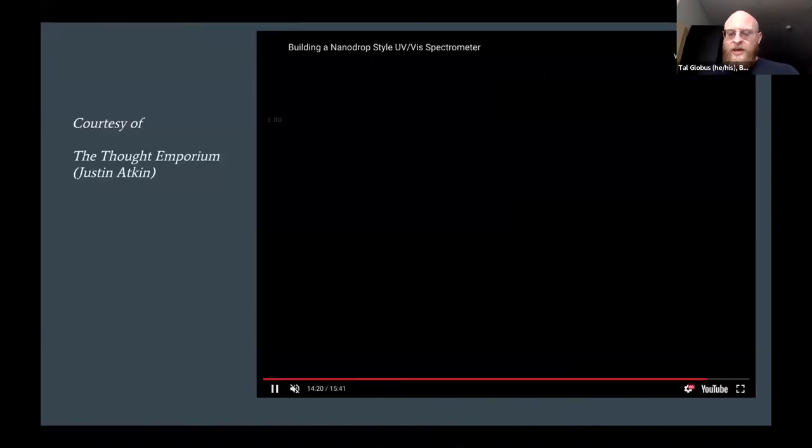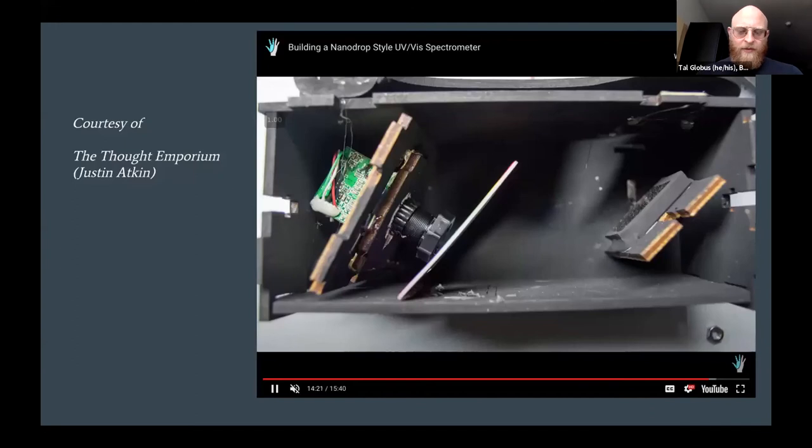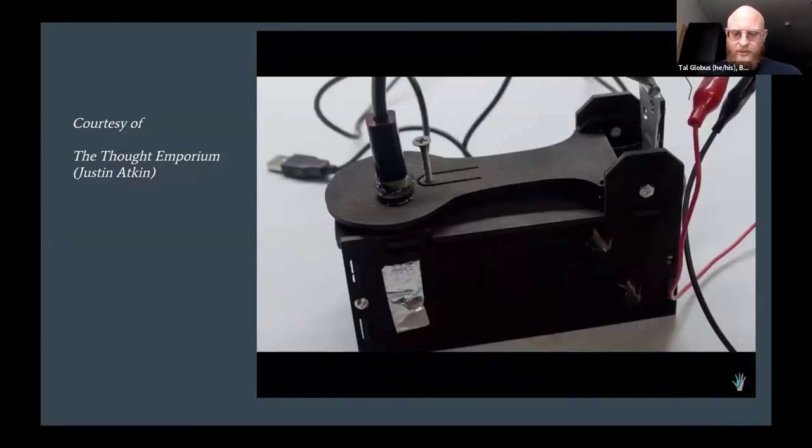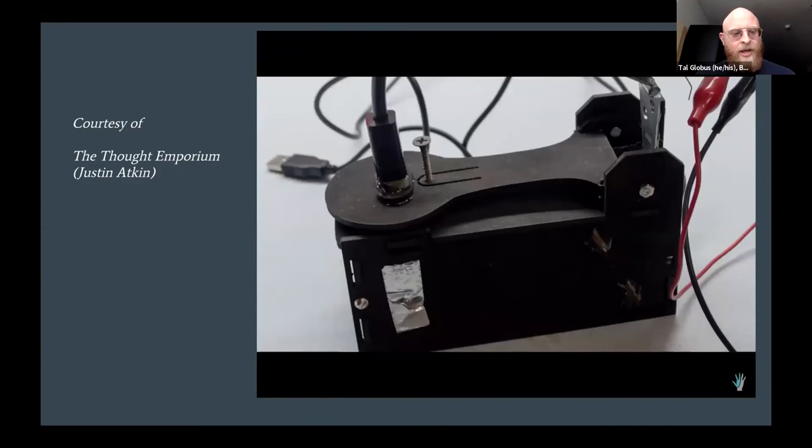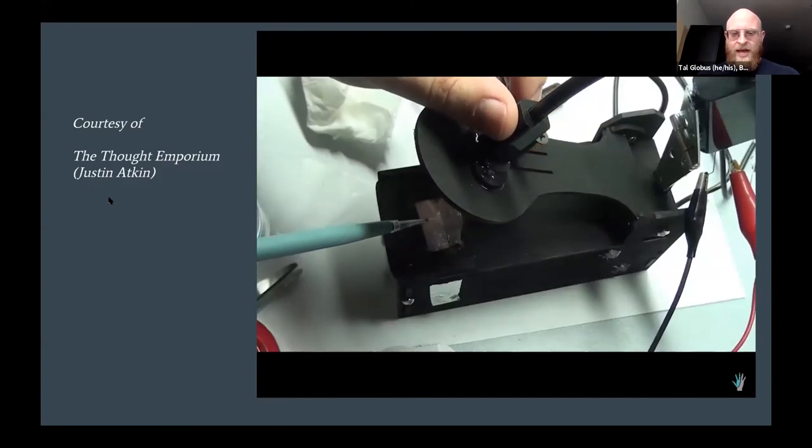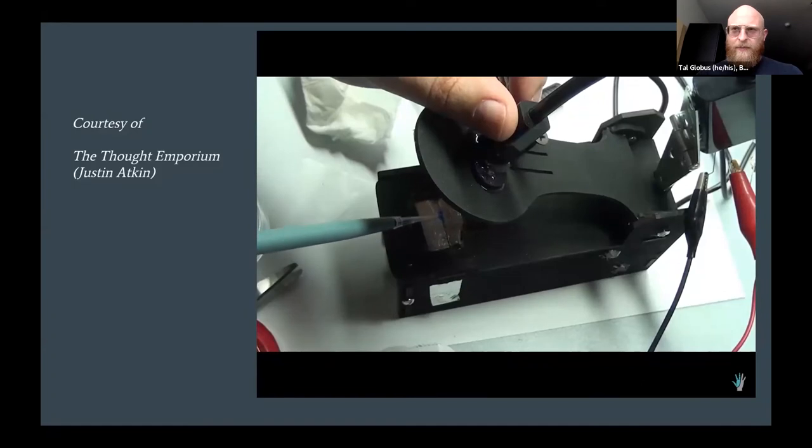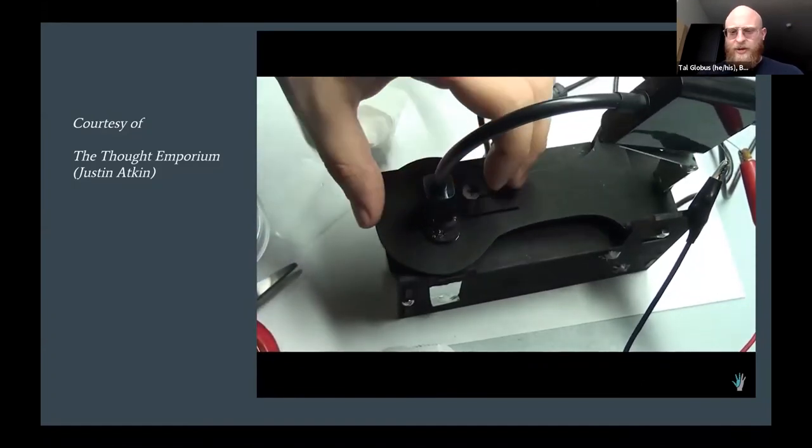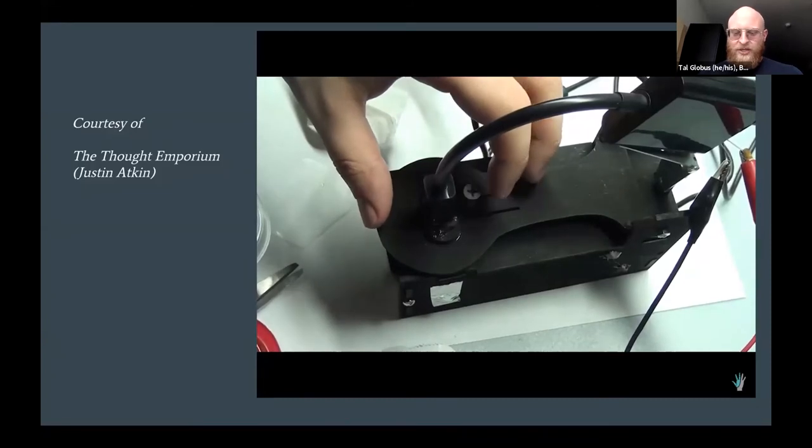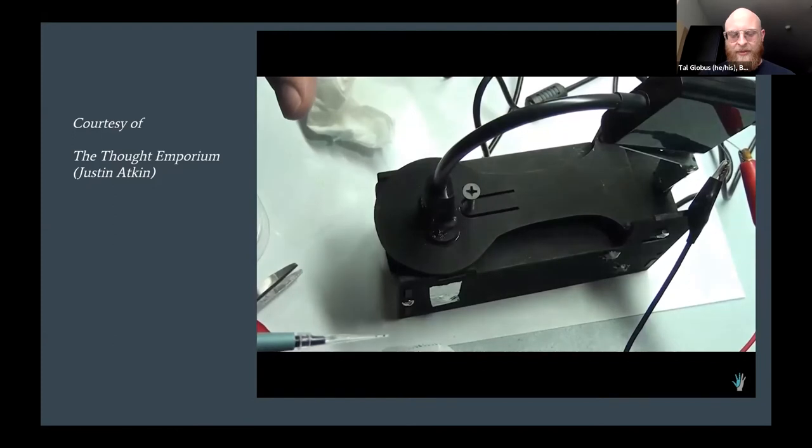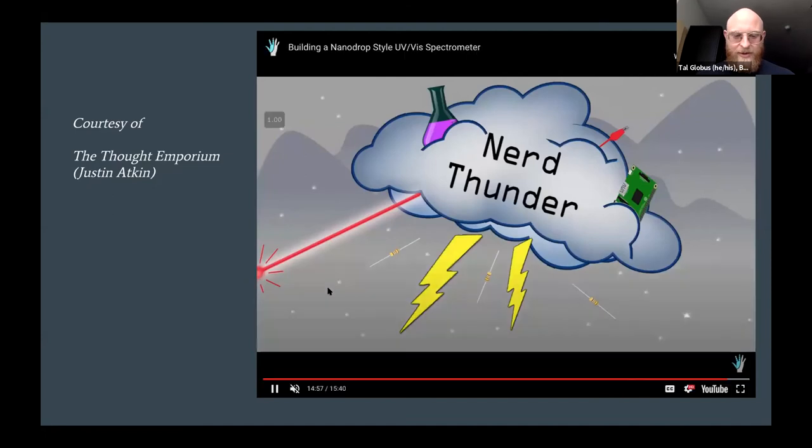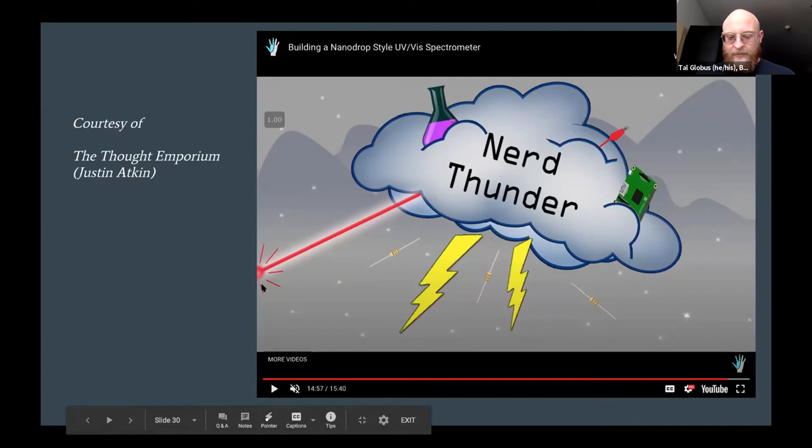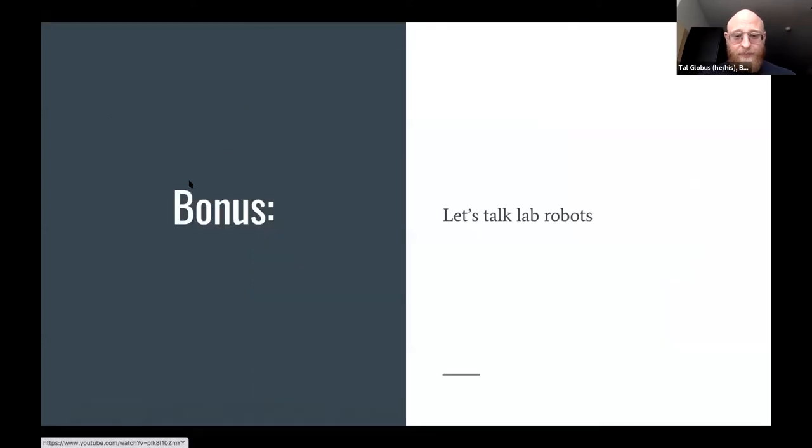Finally on the sensor side, there's a YouTube channel that does some really great work as far as building tools. Justin Atkin is actually registered to be at this very conference. His channel, The Thought Emporium, puts together a lot of these tools. This was a DIY spectrometer that they built for quite inexpensive. Essentially there's a prism and a camera in there. This replaces a product that would typically be anywhere from a few hundred to a few thousand dollars to buy at very low cost.